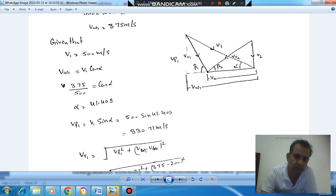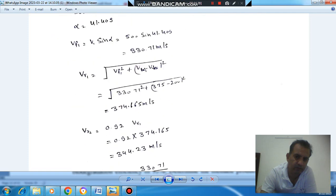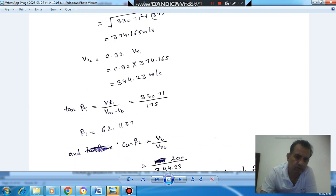We have VW1 minus blade velocity. So we can find out tan beta 1 = VF1 / (VW1 minus blade velocity). So beta 1 comes out.